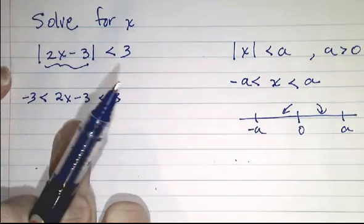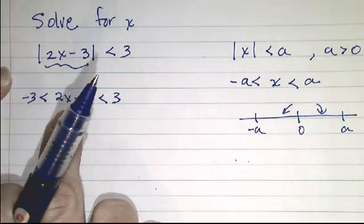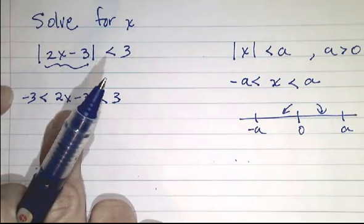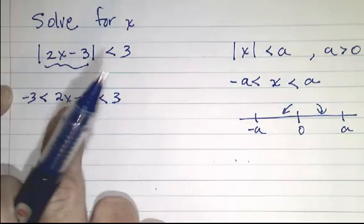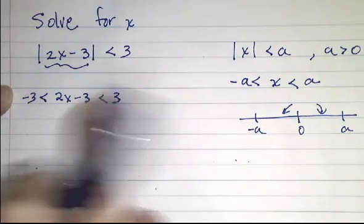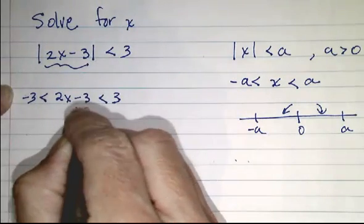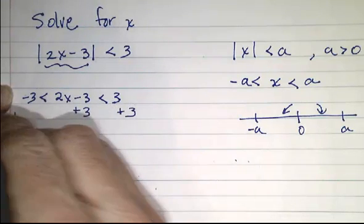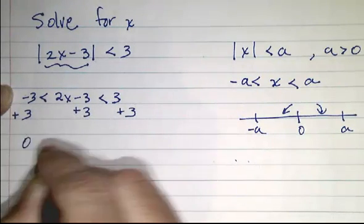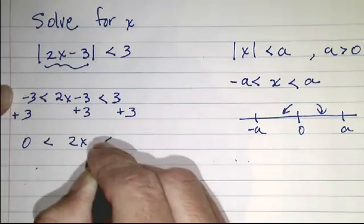Now we want to isolate our x in the middle, so we need to undo what's being done to x. And just like with equations, whatever we do to any piece, we need to do to all pieces. So we'll start by adding 3 to all sides, and we get 0 is less than 2x is less than 6.